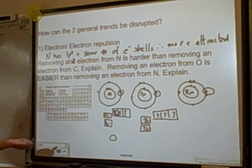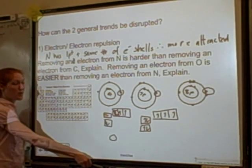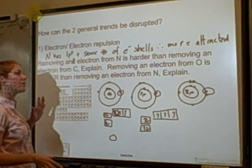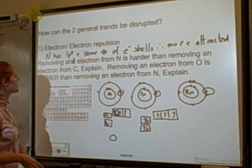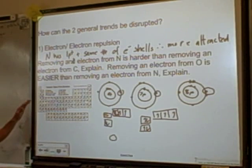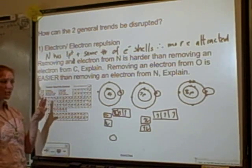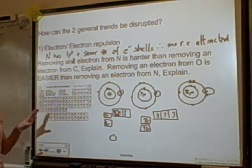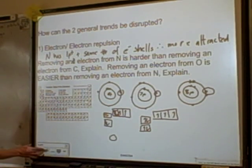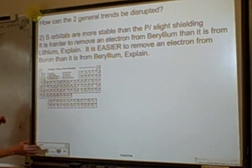You're not asked to predict when electron-electron repulsion will occur. You'll be told that removing an electron from oxygen is easier than from nitrogen and asked why. Since you can't explain it with the typical trend, look at one of the three exceptions — electron-electron repulsion is the first one.